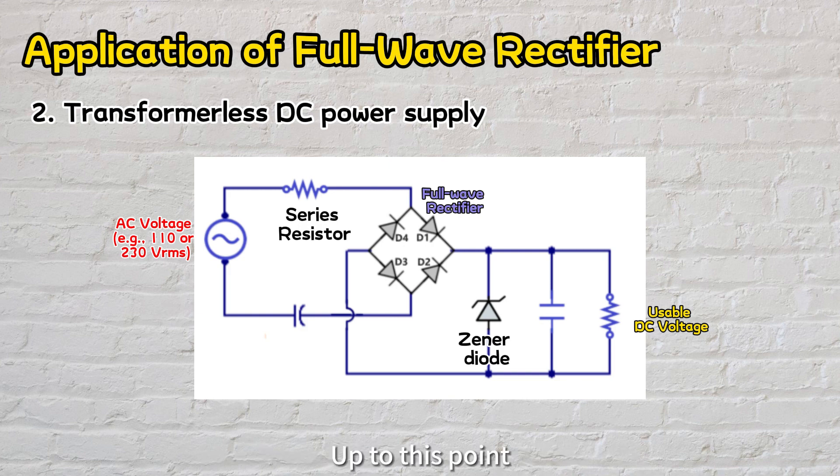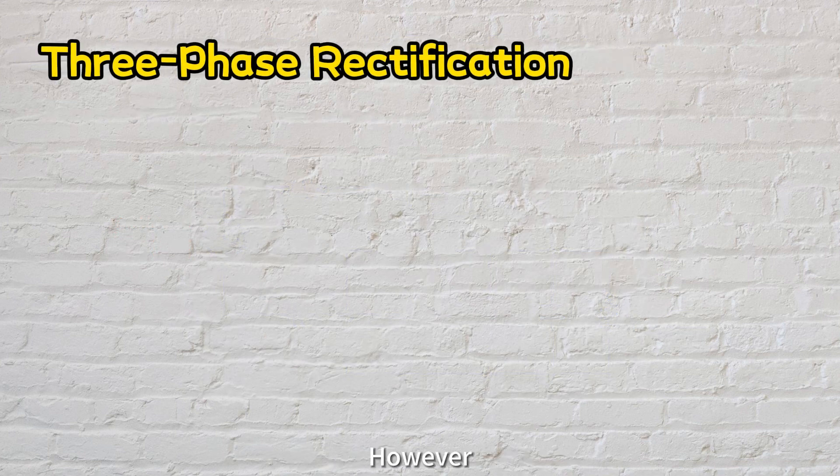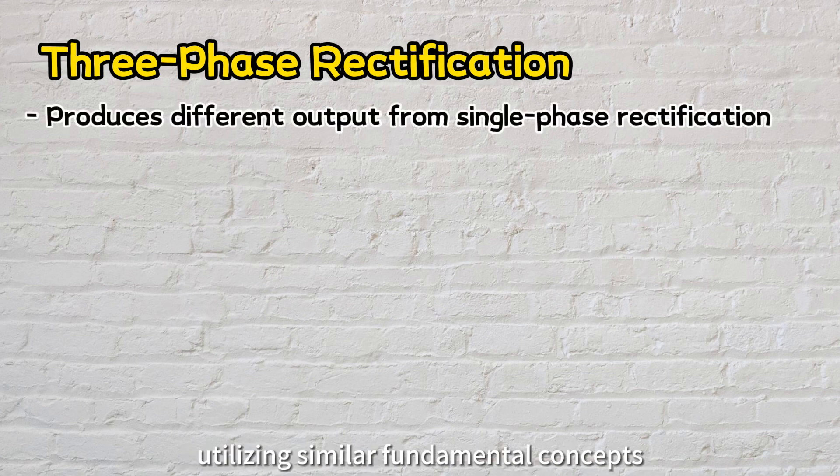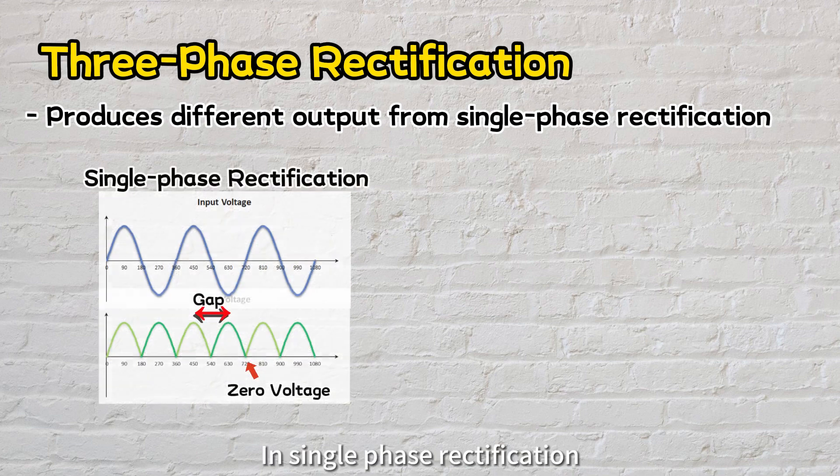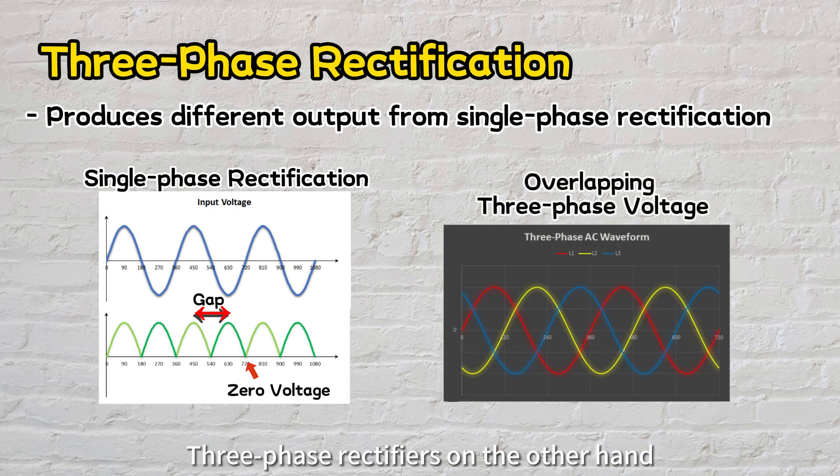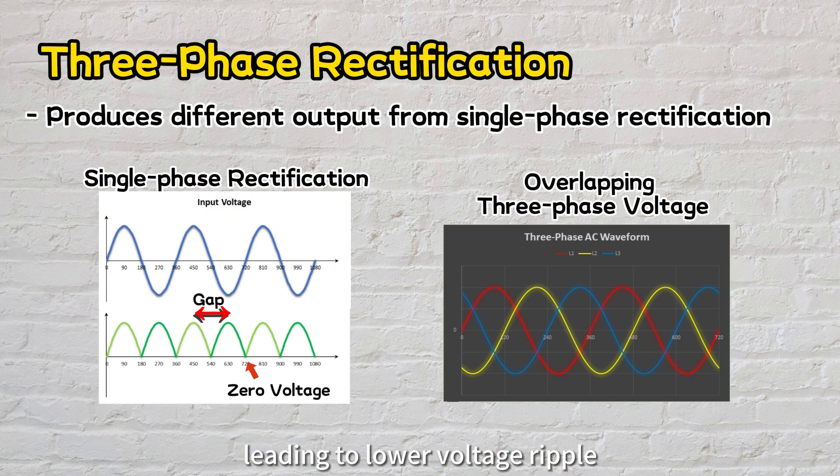Up to this point, our discussion has mainly focused on single-phase rectifiers. However, three-phase rectifiers play a crucial role in various applications, utilizing similar fundamental concepts to single-phase rectification, but with distinctions in their configuration and output. In single-phase rectification, there are instances of zero voltage during the cycle, resulting in noticeable gaps in the output. Three-phase rectifiers, on the other hand, harness the advantages of three overlapping phases to significantly reduce these gaps, leading to lower voltage ripple.